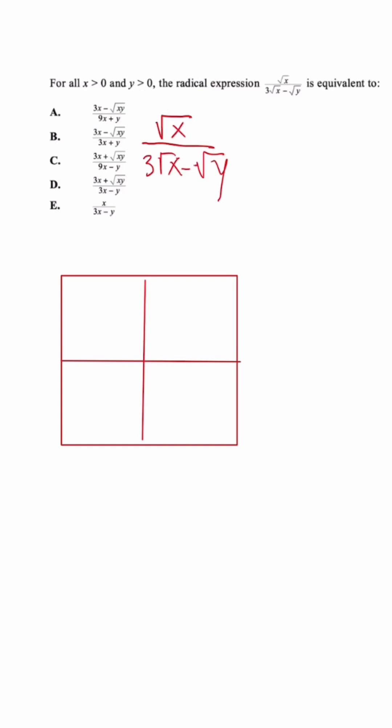To simplify the expression, we have to get rid of the radicals in the denominator by rationalizing. So we're going to multiply by the conjugate, which is just the same expression with the opposite sign.